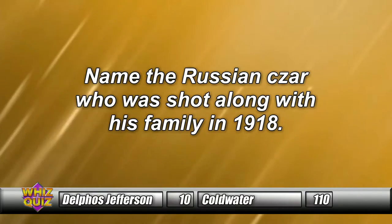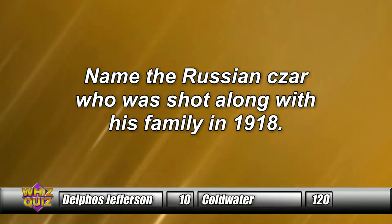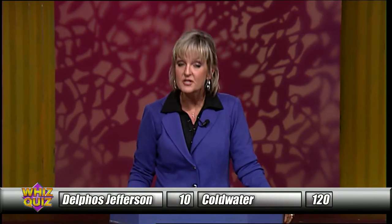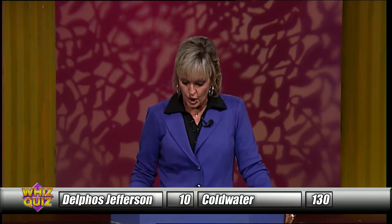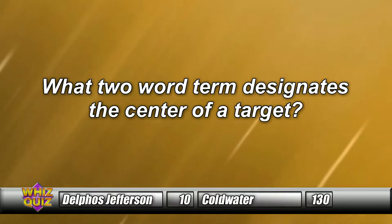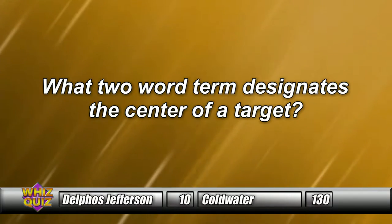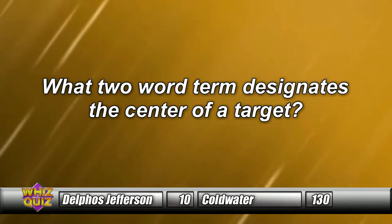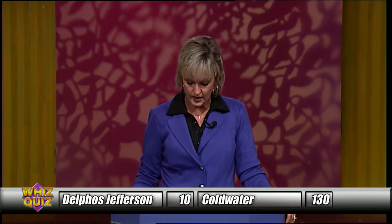Name the Russian czar who was shot. Coldwater answers — 'Nicholas the Second' — that is the answer. Number seven: What two-word term designates the center of a target? Coldwater answers — 'Bullseye' — bullseye is the answer.